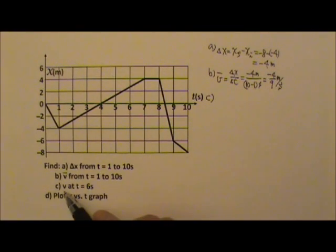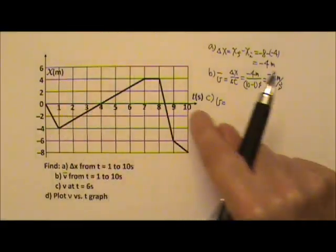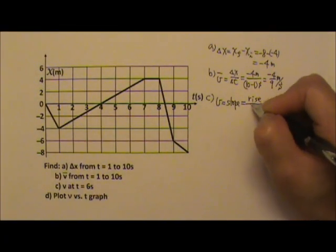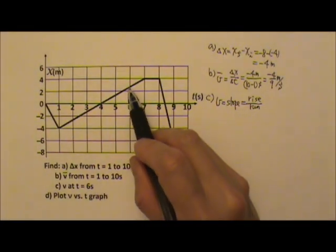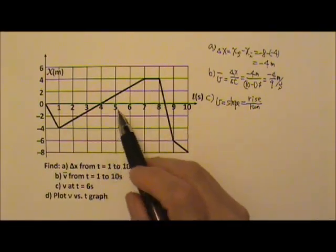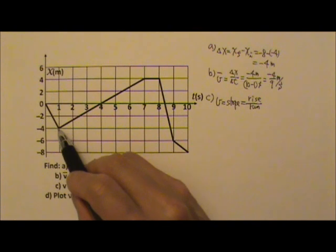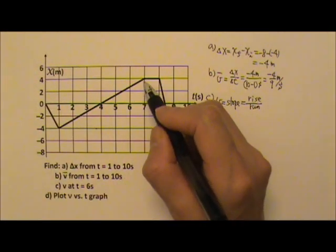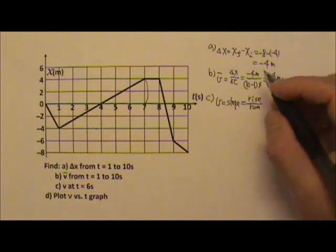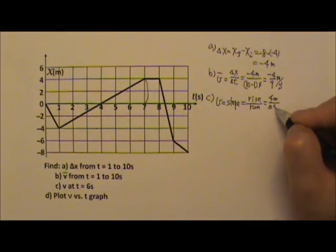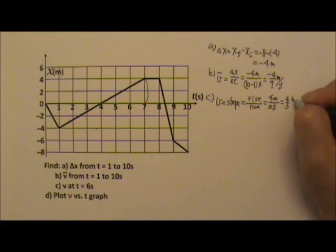Part C: we want the velocity at t equals 6 seconds. Velocity at a specific moment is the instantaneous velocity, which equals the slope of the graph. Since t equals 6 is on a straight-line segment, we do rise over run. Using a triangle along this segment: the rise goes from 0 to 4, so rise equals 4 meters. The run goes from t equals 4 to t equals 7, so run equals 3 seconds. This gives us 4 thirds meters per second.